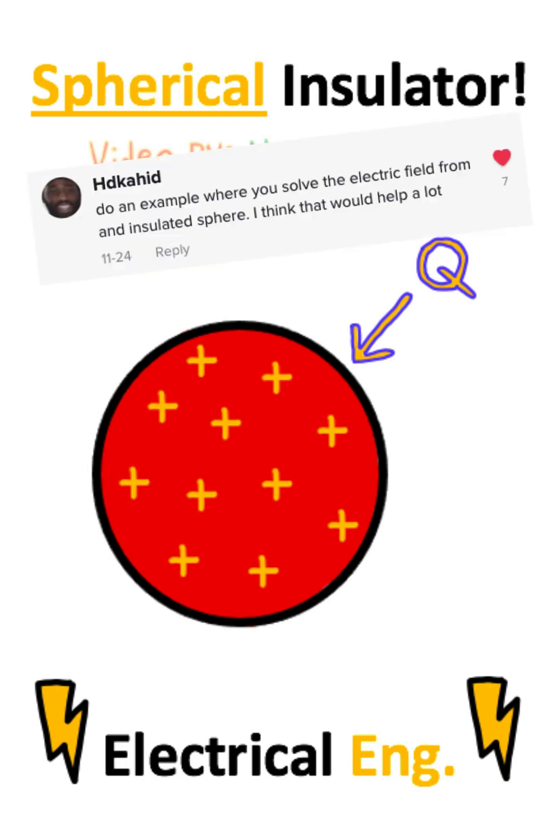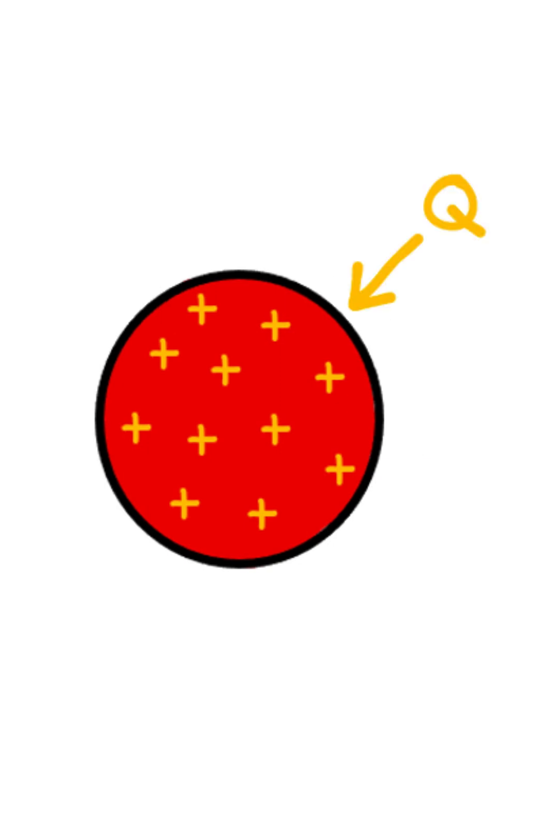How could we find the electric field inside a spherical insulator? Imagine that we have a solid sphere of insulating material with a uniform charge q. If we're given the radius of the sphere, how could we find the electric field at some point inside the sphere?